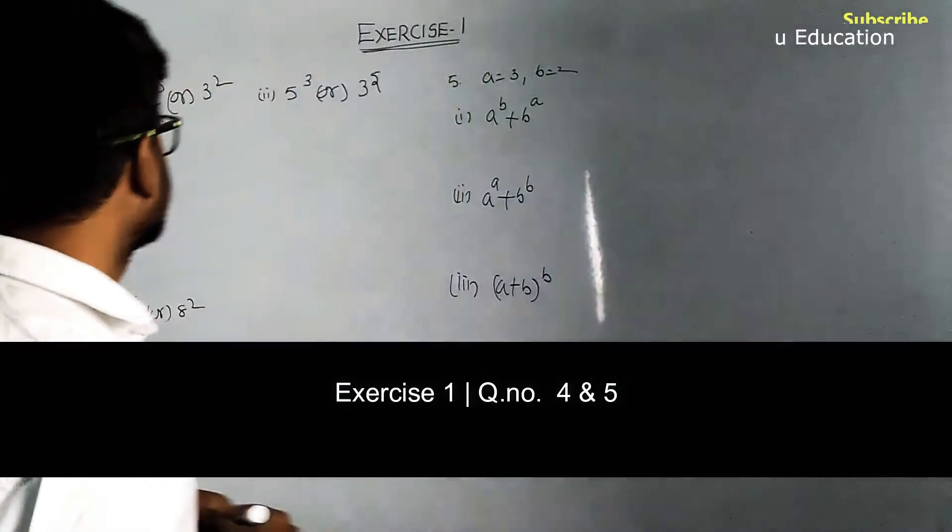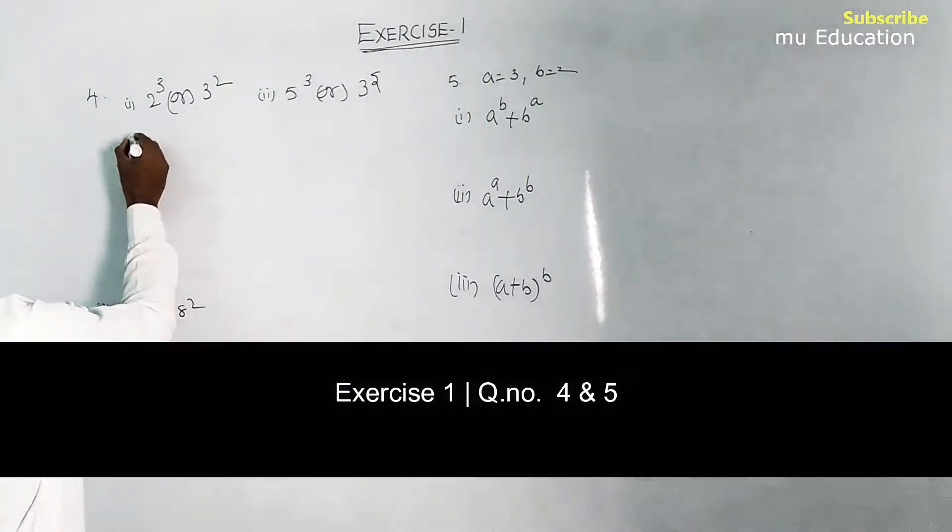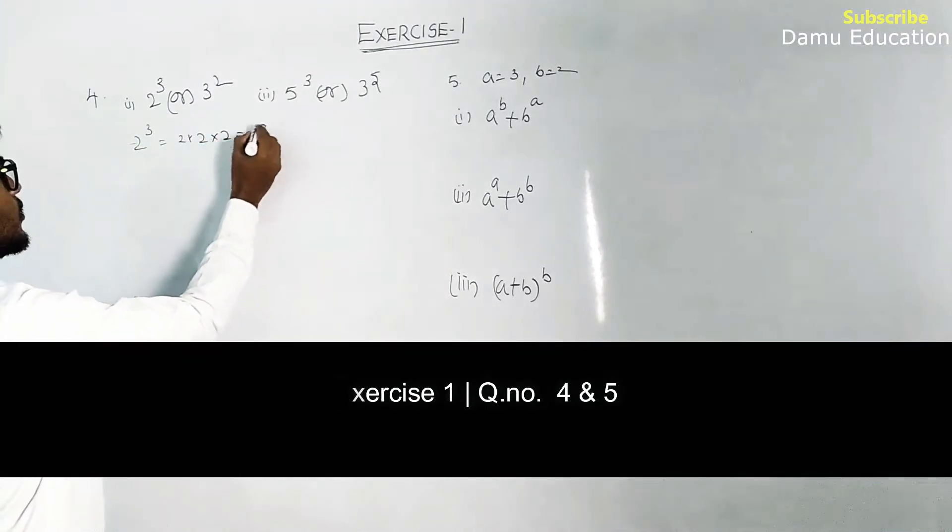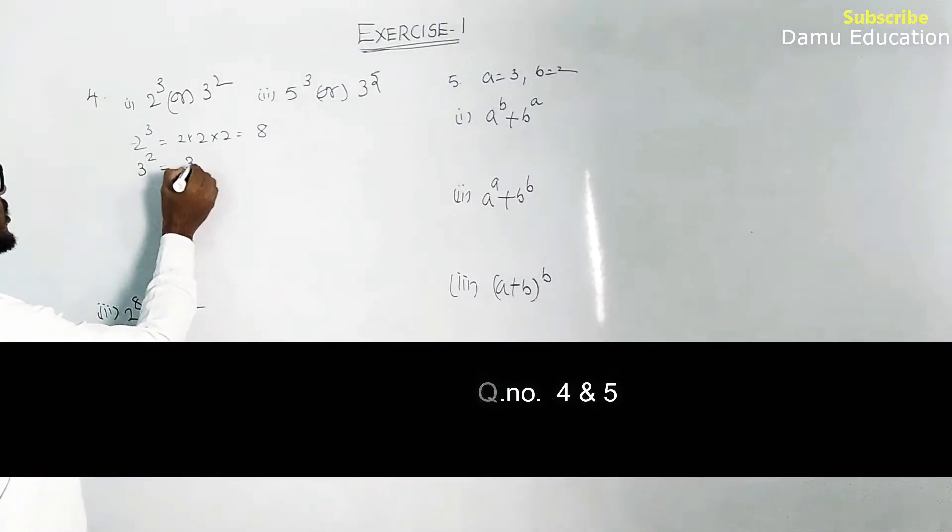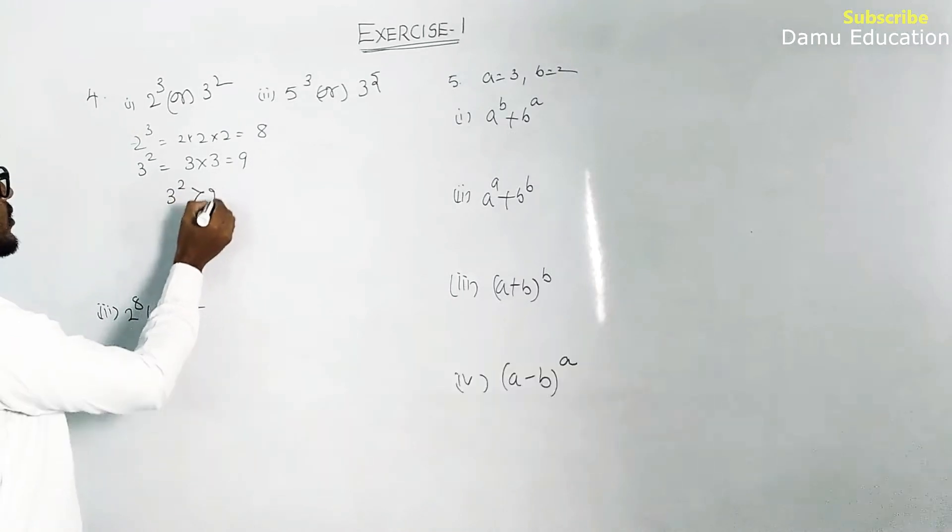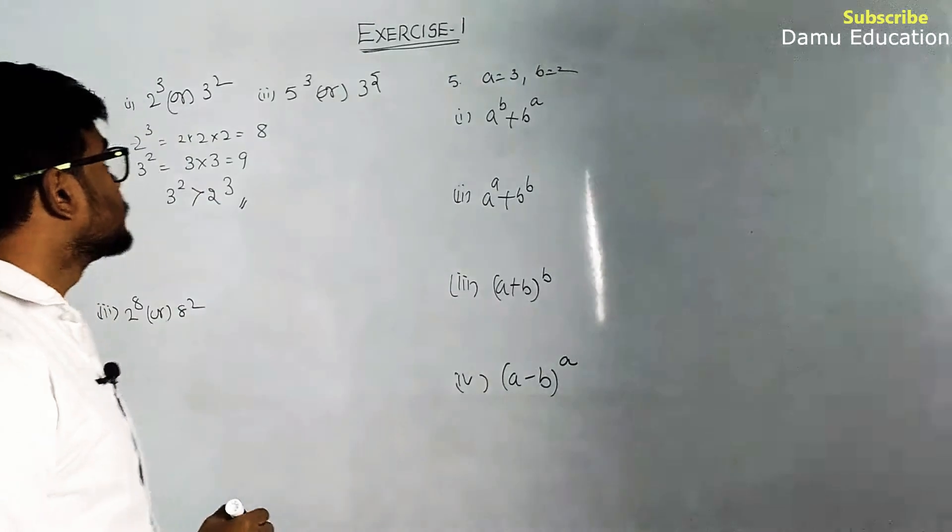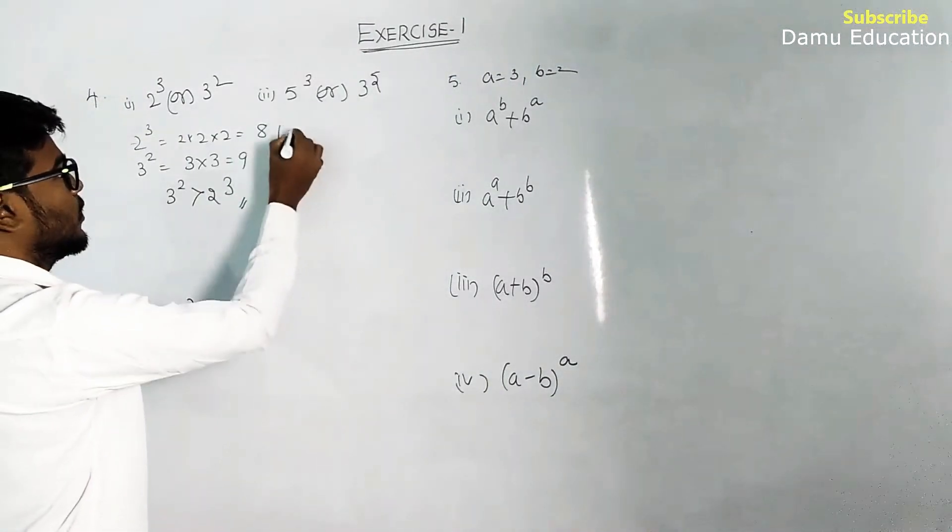Write in expanded form: 2³ equals 2 × 2 × 2, that will be equal to 8. Then 3² equals 3 × 3, which is 9. So 3² is greater than 2³.